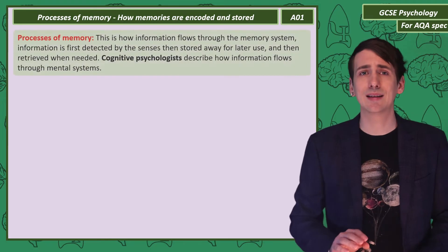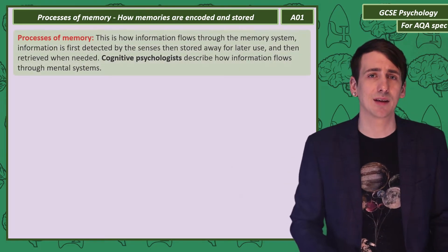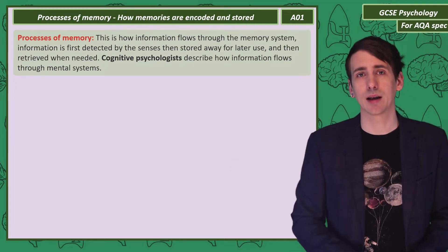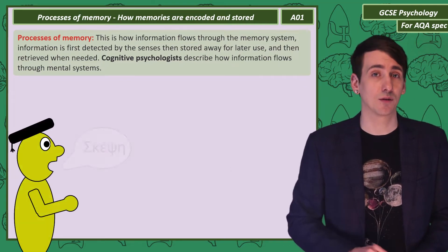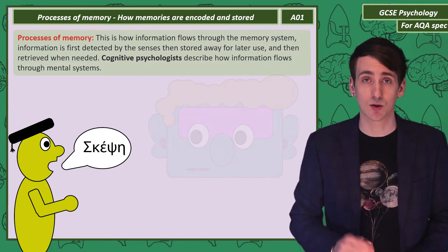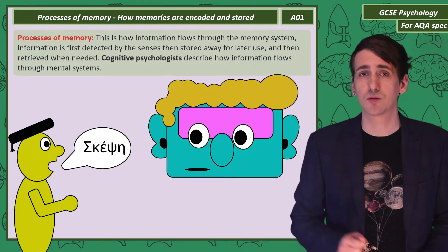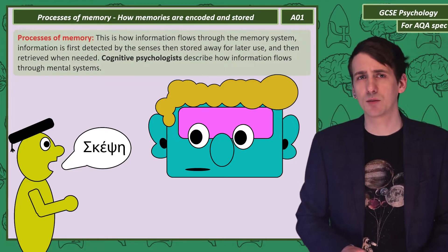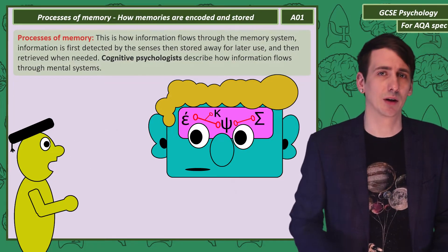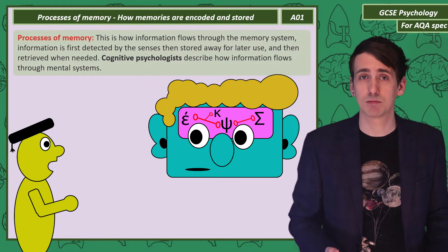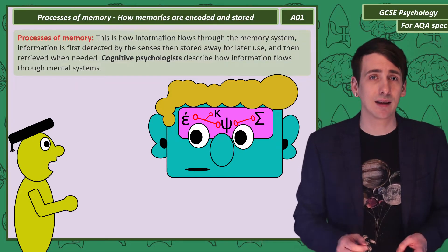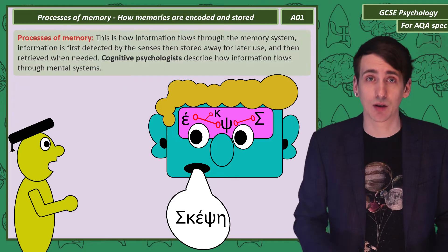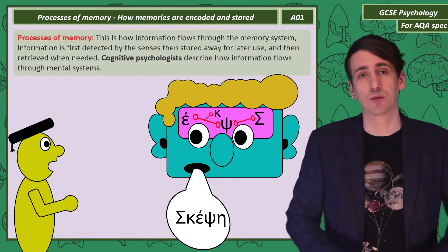Processes of memory. The whole idea of memory being a process is simply information flowing through a system. Think about it like this: your teacher tells you a fact, your senses — in this case your ears — detect information from the environment, the words. After you detect that information you have to store it somewhere. And then at some point, like your exam, you're going to need to take the information out of storage and actually use it. That's the process — that's the information flowing through the system.